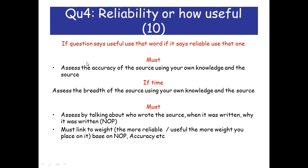There are two things you must do in question 4 regardless of time. First, you need to assess the accuracy of the source using your own knowledge and the knowledge given by the source. You must also talk about the nature, origin, and purpose of the source. The nature is basically who wrote it and where it came from. The origin is when it was written, and the purpose is obviously why it was written. If you have enough time, then assess the breadth of the source using your own knowledge.